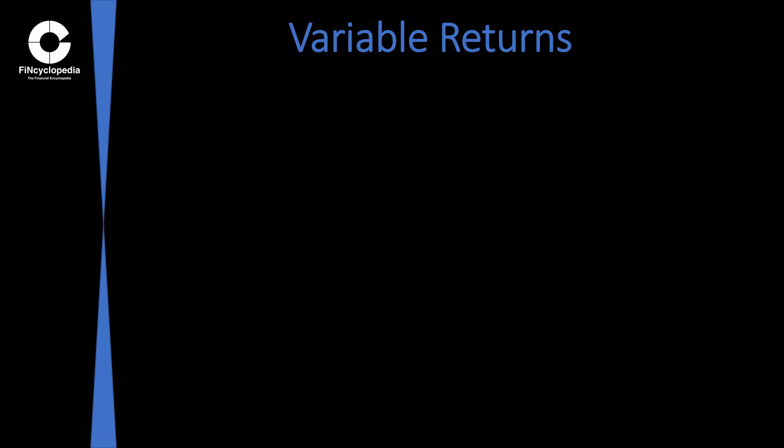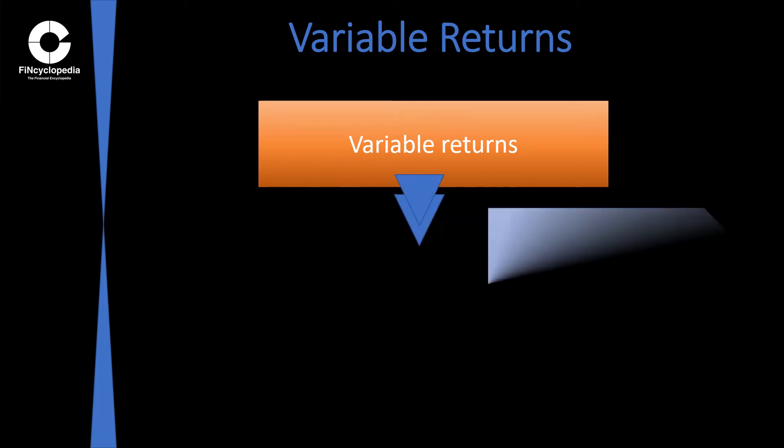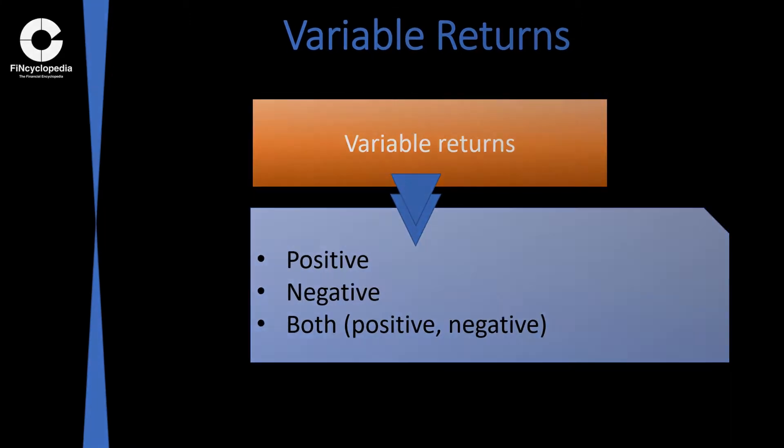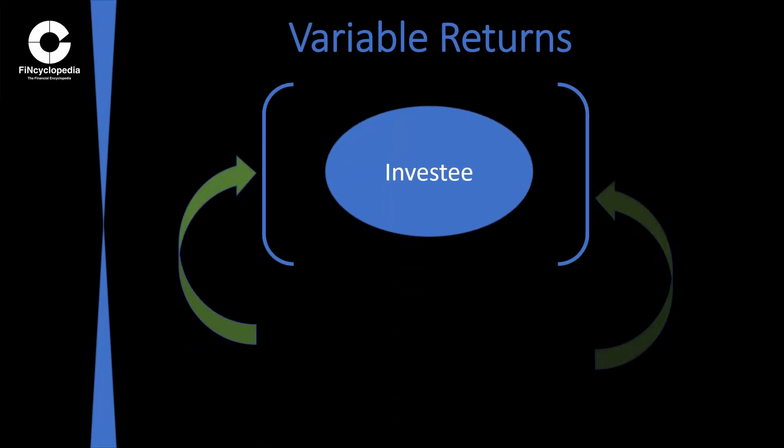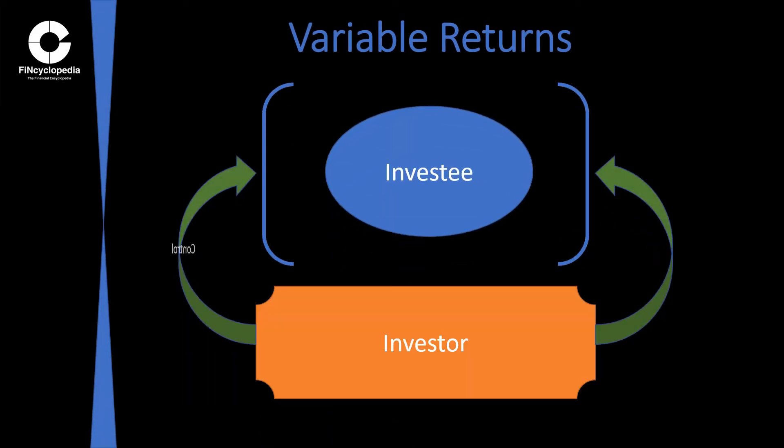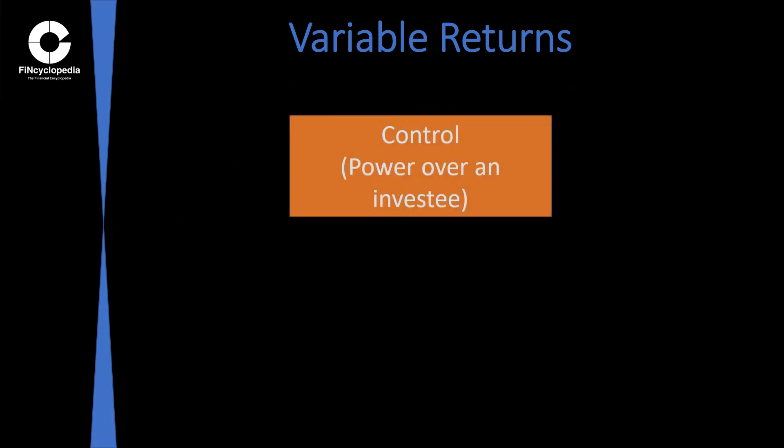These returns can be positive, negative, or both. Control over an investee is mainly manifested in the exposure of an investor to, or its rights in, variable returns that arise from its involvement with the investee and its ability to affect the returns through that power.